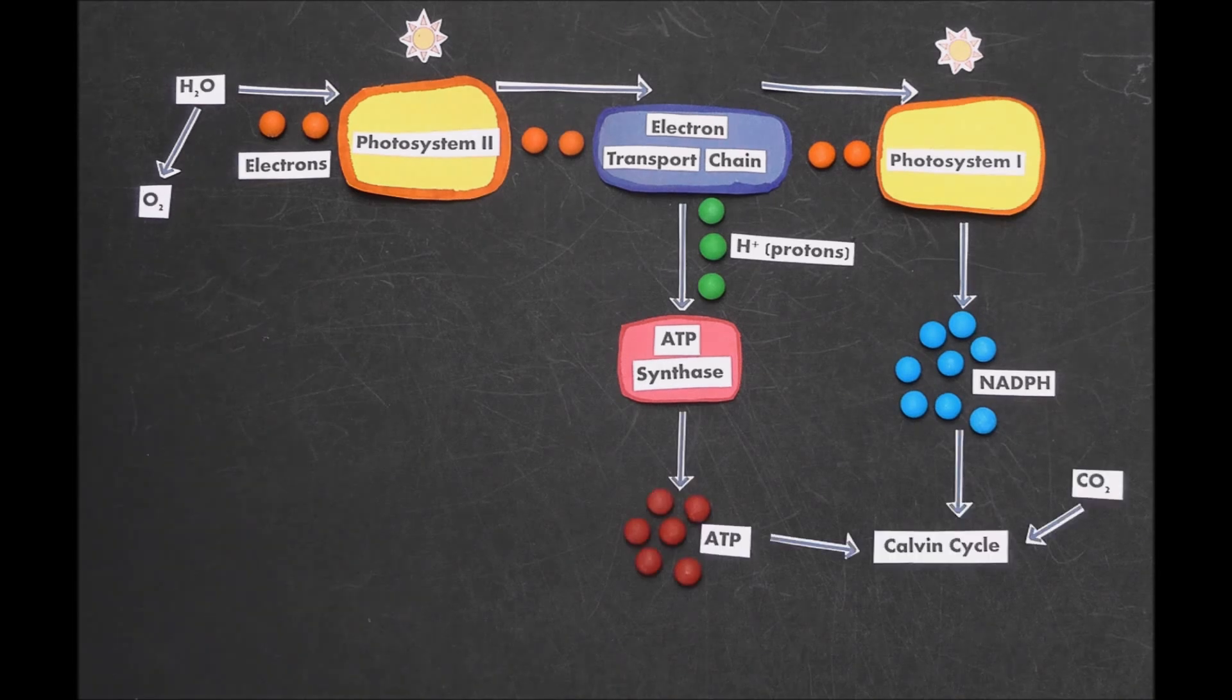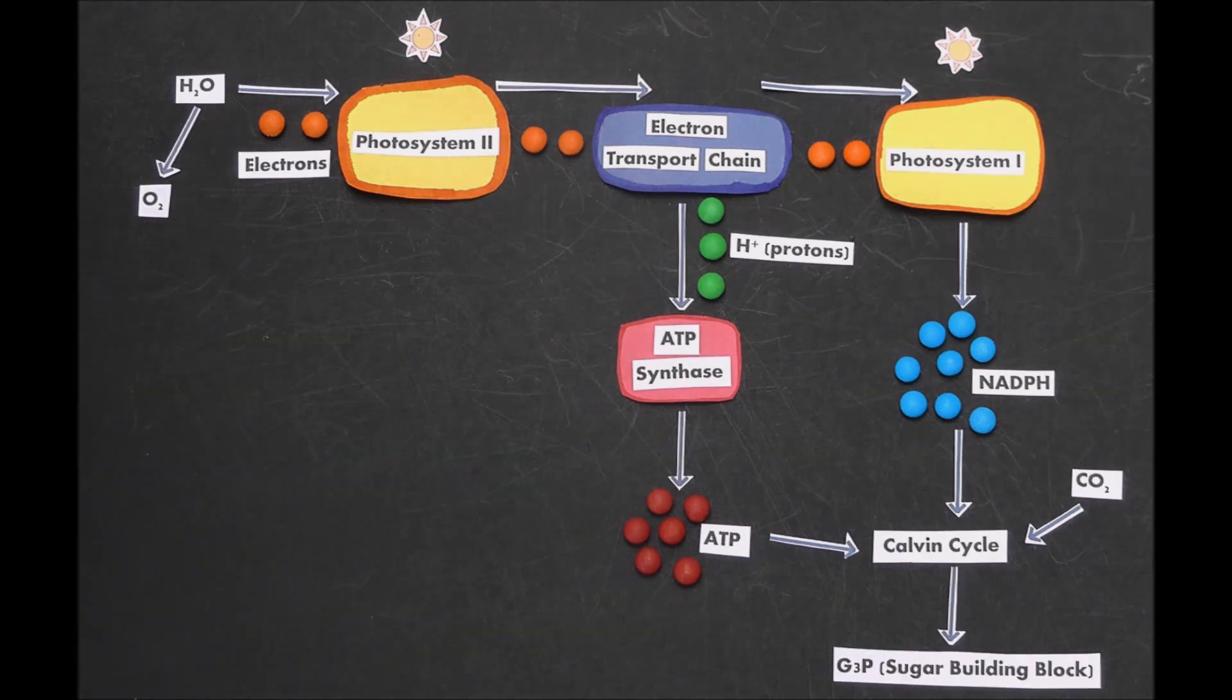Now, we can use carbon dioxide from the air along with the ATP and NADPH to fuel the Calvin cycle. This cycle uses the energy from ATP to transfer the electrons from NADPH to carbon dioxide, building the molecule glyceraldehyde-3-phosphate, or G3P. That's used as a building block for sugars that will be used by the plant for energy and growth, basically keeping it alive.